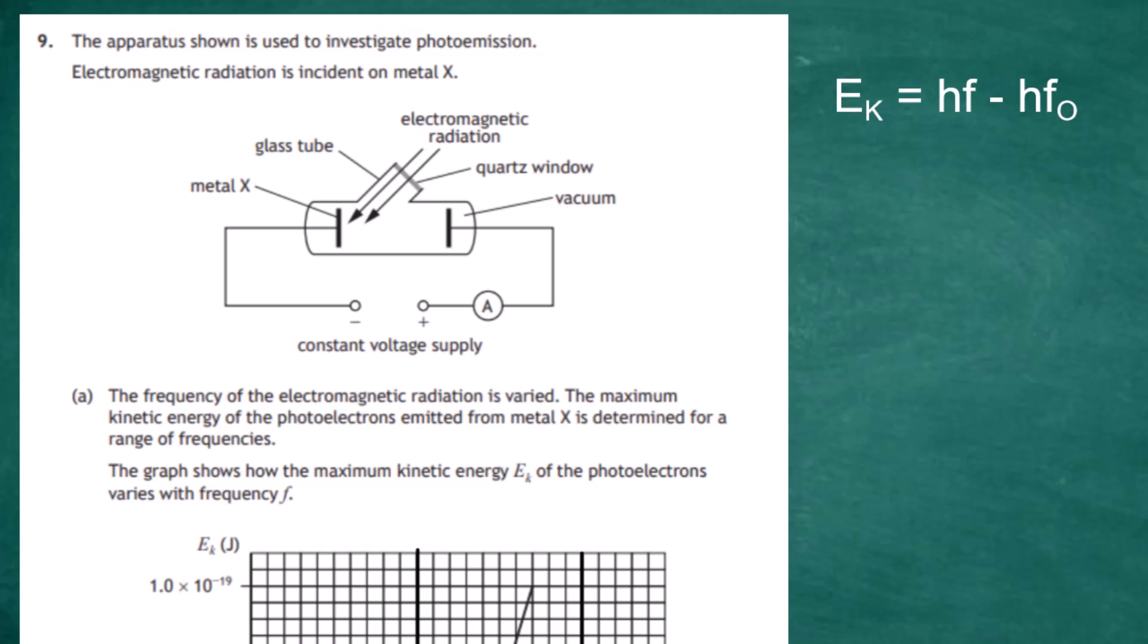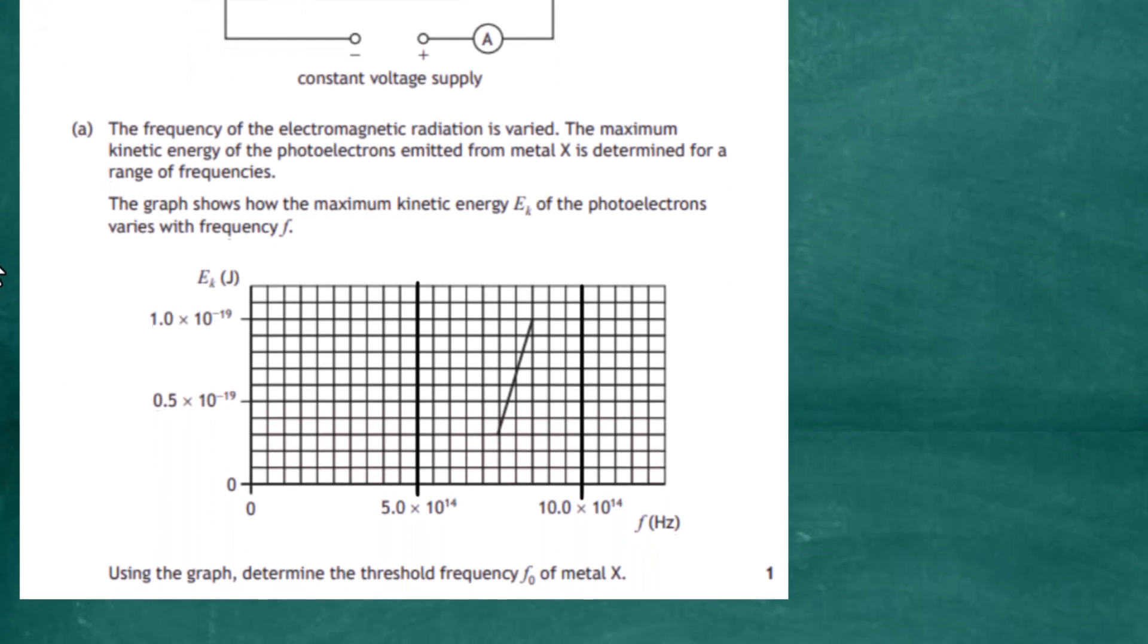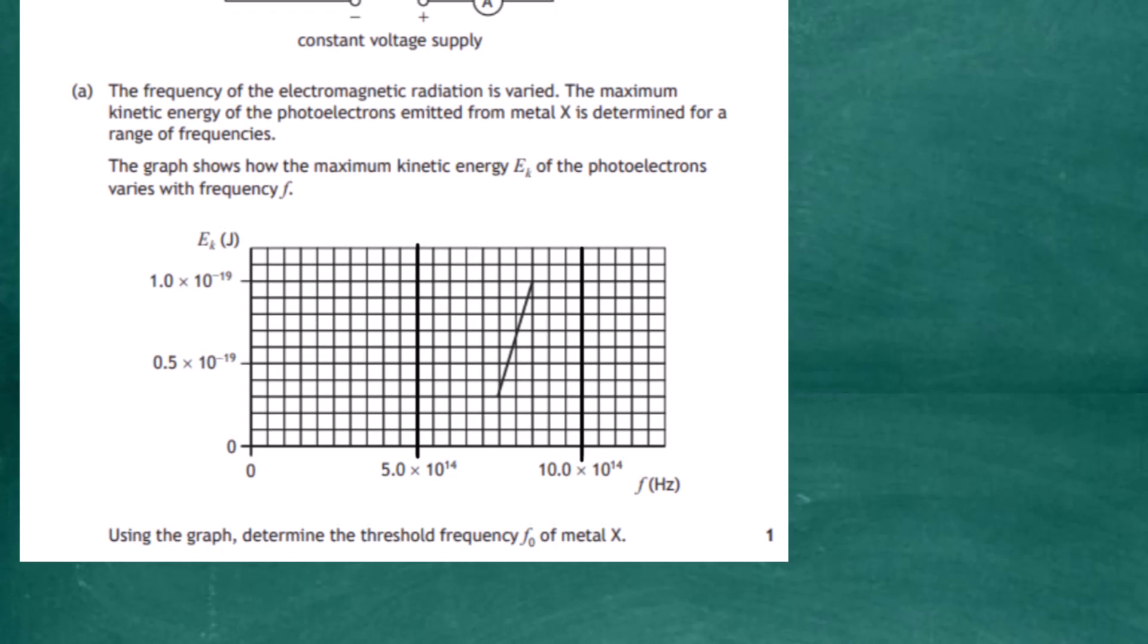The question goes on to say the frequency of the electromagnetic radiation is varied, and the maximum kinetic energy of the photoelectrons emitted from metal X is determined for a range of frequencies. The graph shows the maximum kinetic energy on the y-axis and the frequency of the light on the x-axis.